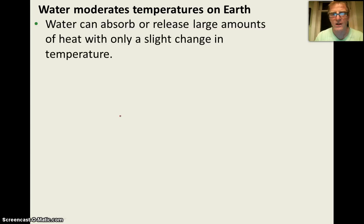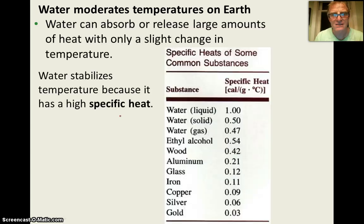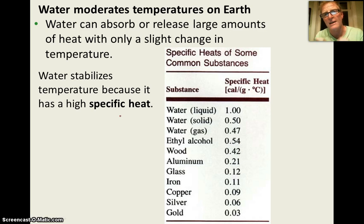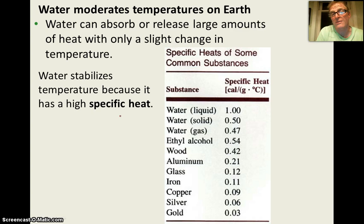Water has what we call a high specific heat. This means it takes a lot of energy to heat water up one degree Celsius, and it takes the removal of a lot of energy to cool it down one degree Celsius. This is important because water helps to moderate Earth's average temperature. The cohesiveness of water — the fact that water sticks to itself — means that to get those molecules to move faster requires more energy. So Earth, being mostly water, has a high specific heat, and Earth's average temperature varies very little compared to other planets, day versus night and season versus season.